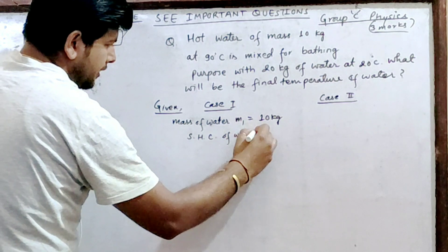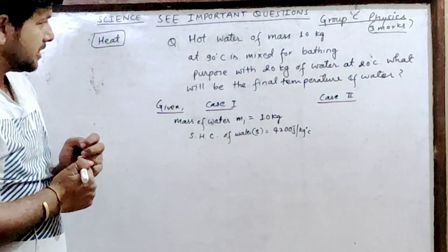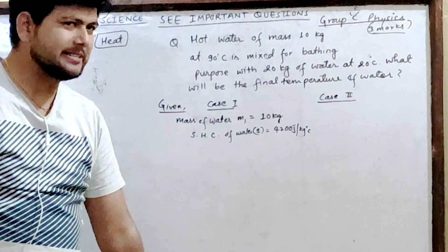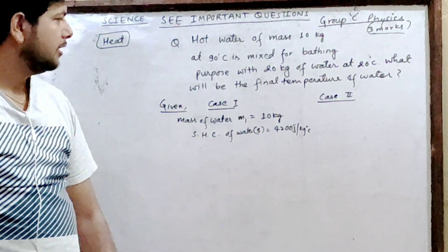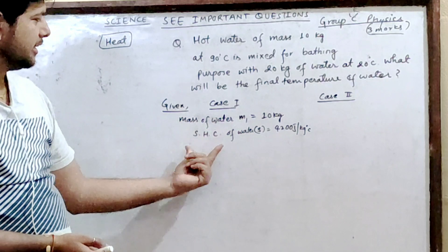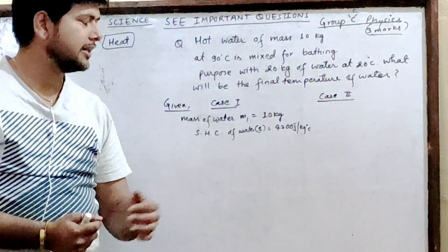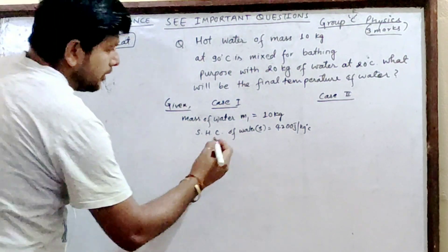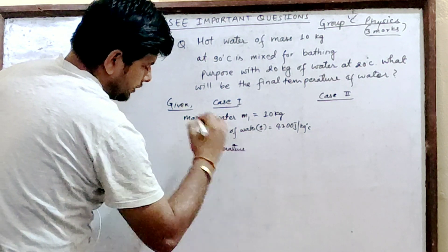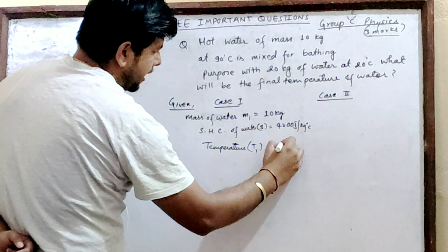Specific heat capacity of water is equal to 4200 joules per kg per degree Celsius. The initial temperature is 90 degrees Celsius.